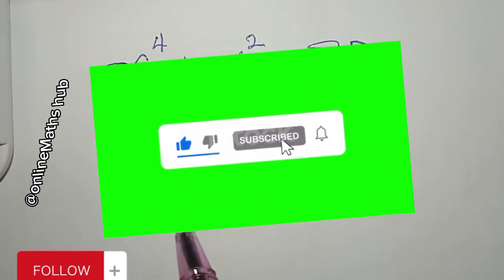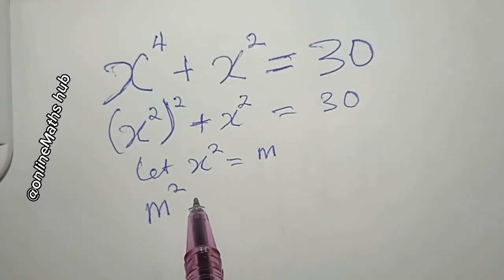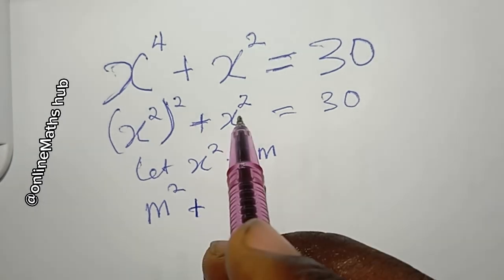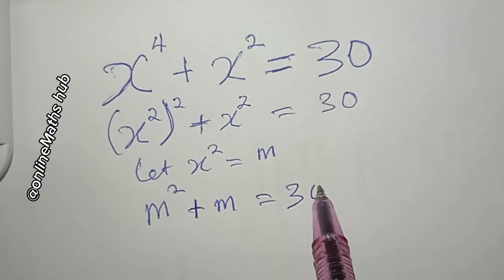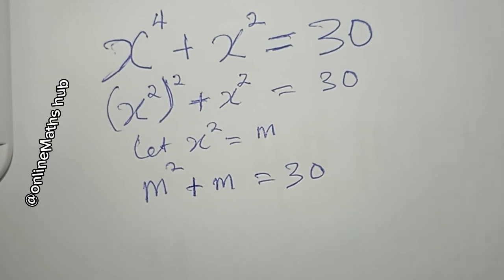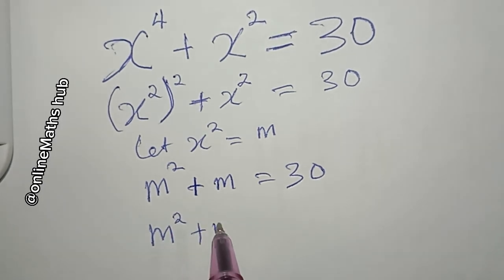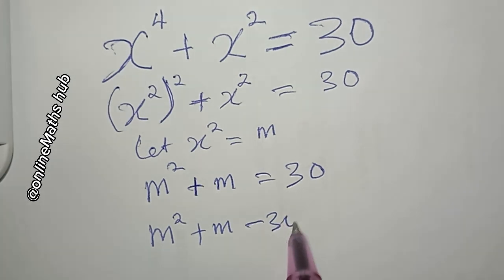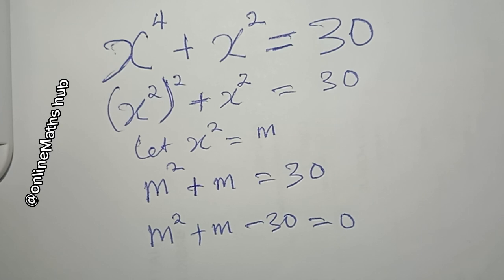So what I now have, putting m in, is m squared plus m is equal to 30. I'm going to bring the 30 to the left-hand side so that I have m squared plus m minus 30 is equal to zero.